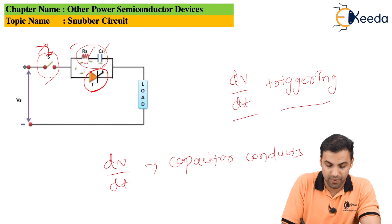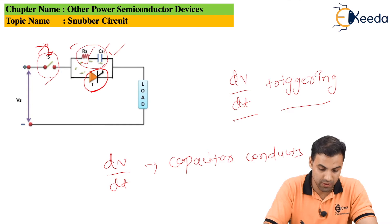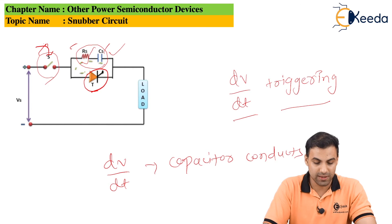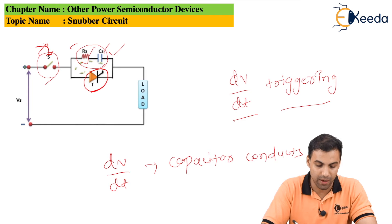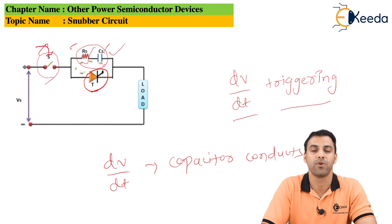When dv/dt triggering occurs, the capacitor conducts and the power is dissipated across this resistor. This is the snubber circuit used to protect the thyristor from dv/dt triggering, simply by implementing a capacitor in parallel with the thyristor.